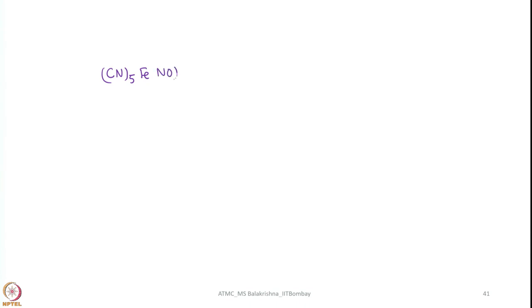Now, let us look into some more reactions of coordinated NO. Let us take a simple coordinated NO complex — a pentacyanonitrosyl complex with a 2 minus charge. When you use a base here, the slow step occurs.